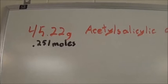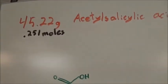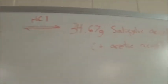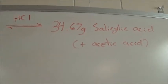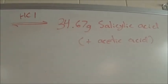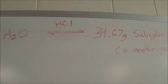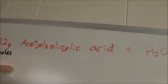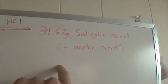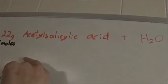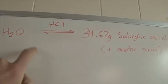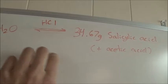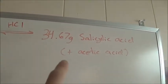I have 45.22 grams of ASA, which is approximately 0.251 moles, and that will react with water using an acid catalyst to generate, hopefully, 34.67 grams of salicylic acid, which is also 0.251 moles. As you can see from the double arrows here, it's actually in equilibrium, so the reaction can go both ways — generating salicylic acid or regenerating acetylsalicylic acid. But it strongly favors the forward side, and the reaction nearly goes to completion — almost to about 90%.